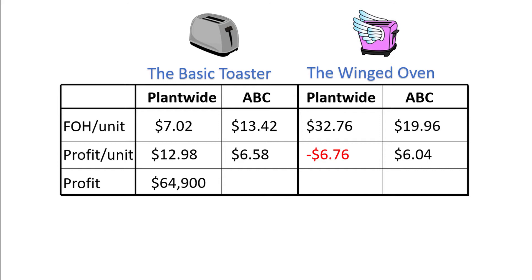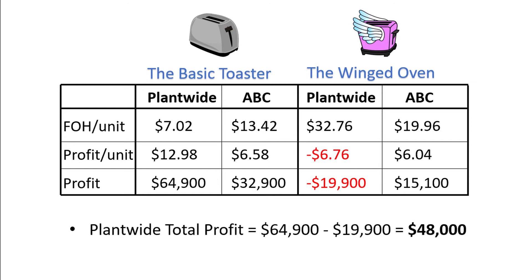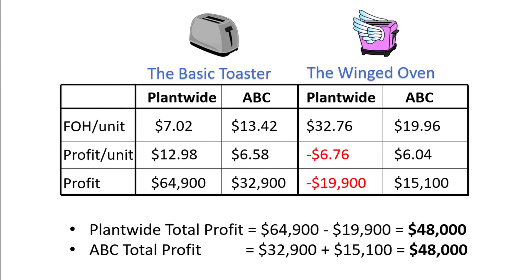As for total profit, the plant-wide $64,900 for basic toasters decreased to $32,900 under ABC, and the $19,900 loss for the winged oven under the plant-wide method switched to a $15,100 profit under ABC. The total profit is $48,000 in either case. With a more detailed costing system like ABC, a company will likely have better cost data on individual products, which can help them make more informed decisions. Each company will have to determine for themselves if it's worth the extra time, effort, and costs needed to implement an activity-based costing system, which will be influenced by the size and resources of the company and how large the overhead costs are as a proportion of total product costs. That finishes up our video and example relating to activity-based costing.